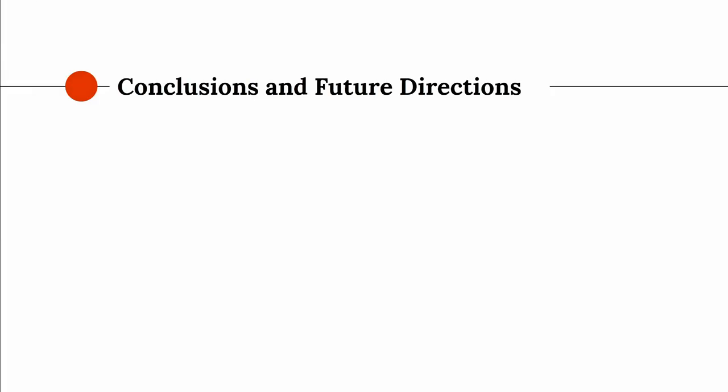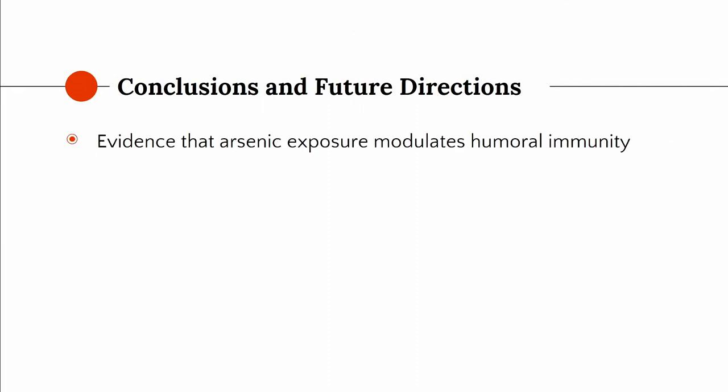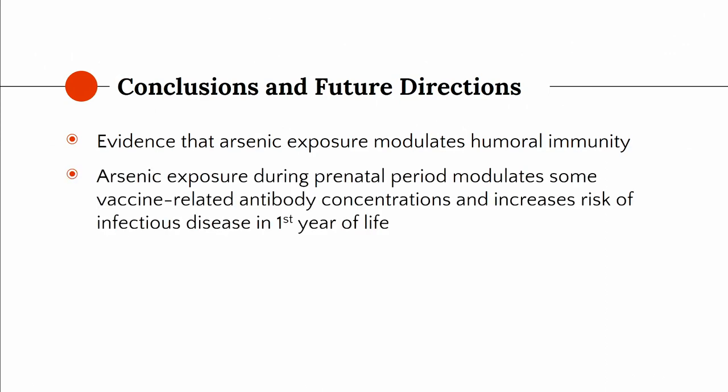In conclusions and future directions: there is a growing body of consistent evidence from different populations using the criteria we use to look at weight of epidemiological evidence, showing that arsenic exposure encountered by regular people going about their lives modulates humoral immunity. The effects on clinical outcomes still need to be explored further. Arsenic exposure during the prenatal period modulates vaccine antibody concentrations and increases the risk of infectious disease in the first year of life.